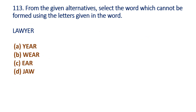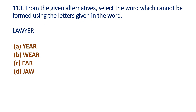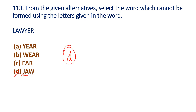Question 113: From the given alternatives, select the word which cannot be formed using the letters given in the word. In these options, what word can be formed? First, check Y, E, A, R — 'YEAR'. Then W, E, A, R — 'WEAR'. Then E, A, R. The letter J and D are not present, so option D cannot be formed. Option D is the answer.